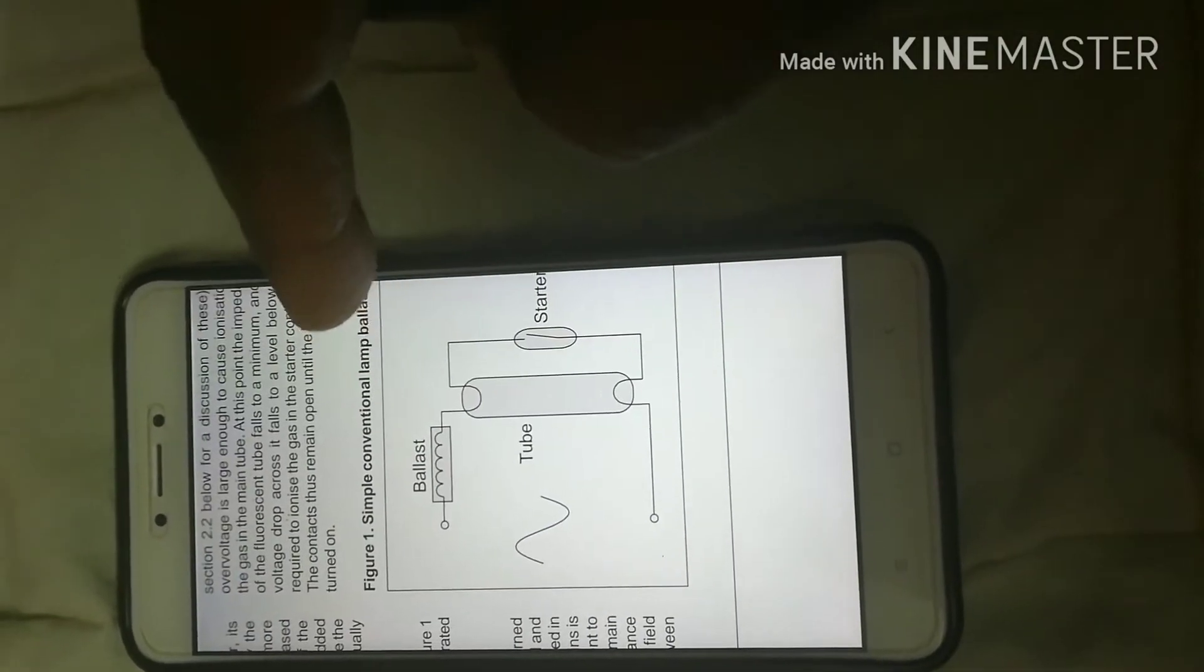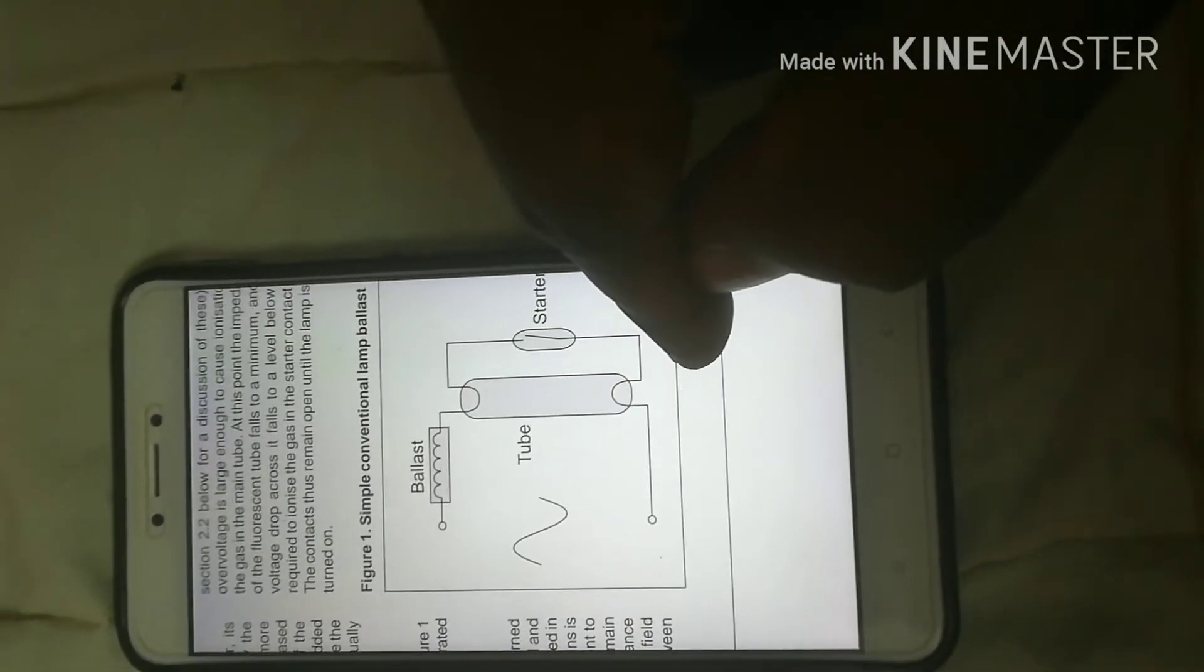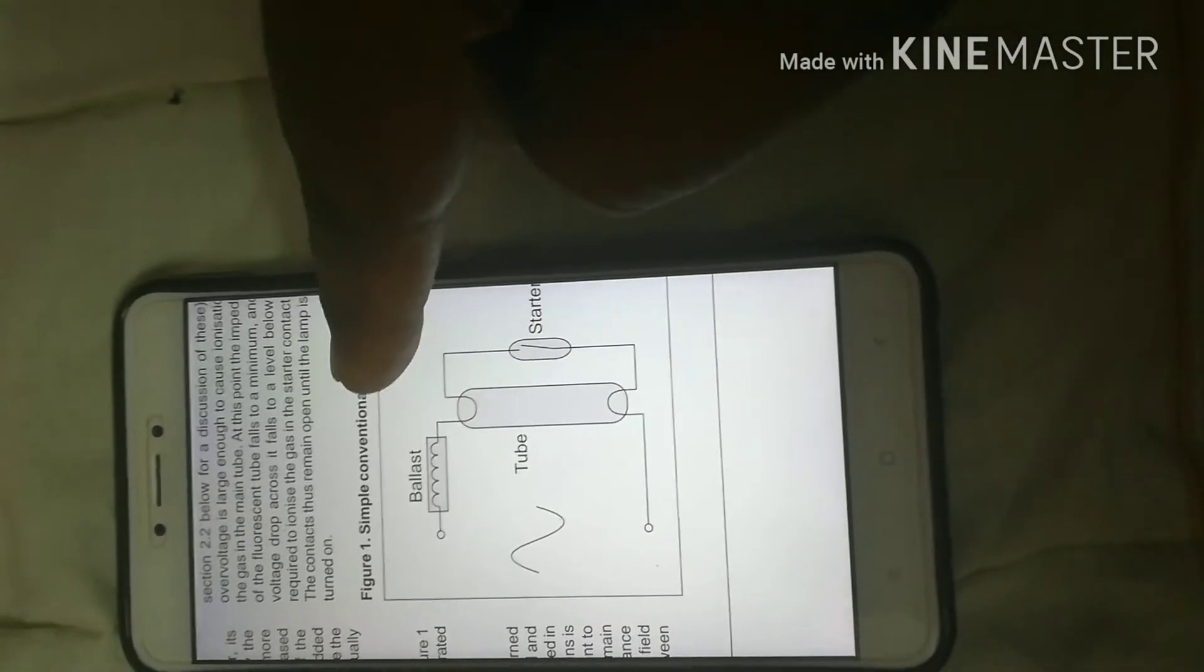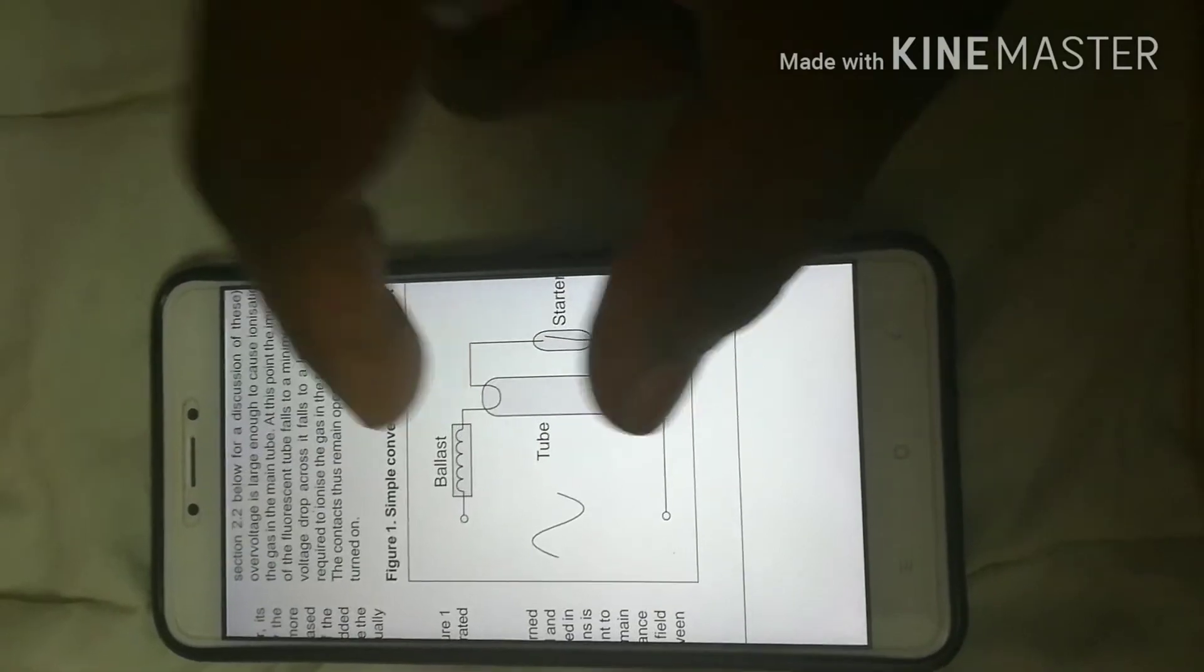Hi! If you don't know what a ballast is, it's an inductor. So the tubelight, how it works is when you pass a voltage between this coil and this coil, it will ionize the gas within this tube.